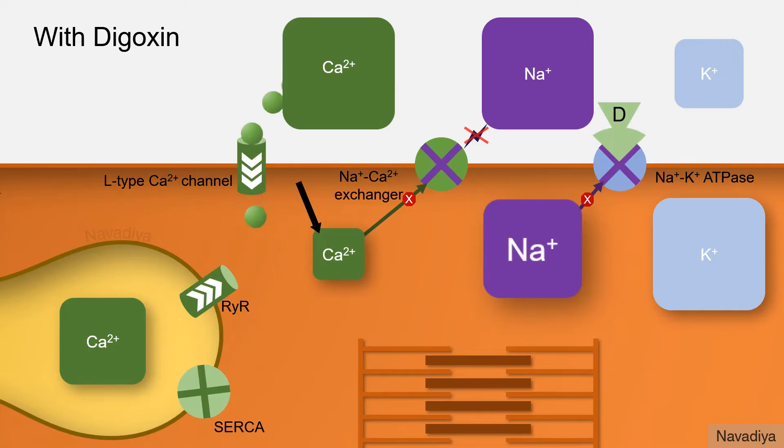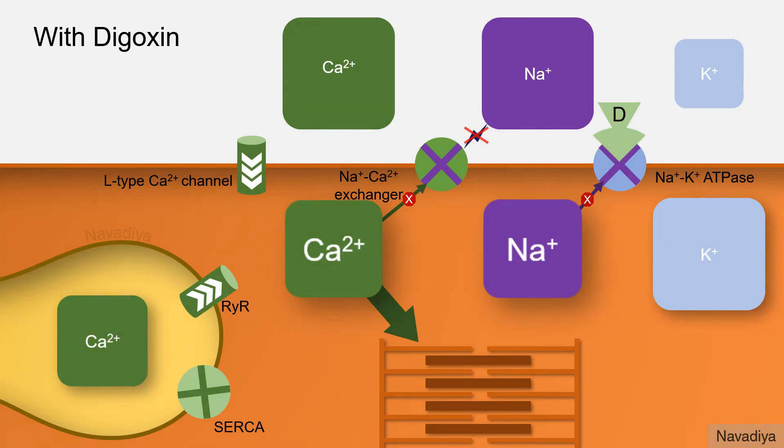So calcium that enters in the cell with each impulse accumulates inside the cell and also gets loaded in the sarcoplasmic endoplasmic reticulum. And finally now when impulse comes, there is massive release of calcium from sarcoplasmic endoplasmic reticulum which in turn produces more powerful contraction.